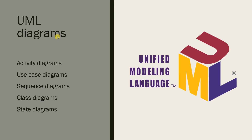Models of both new and existing systems are produced during requirements engineering. Models of the existing system help clarify what the existing system does and can be used as a basis for discussing its strengths and weaknesses. This leads to requirements for the new system. Models of a new system are used during requirements engineering to help explain the proposed requirements to other system stakeholders. Engineers also use these models to discuss design proposals and to document the system for implementation.